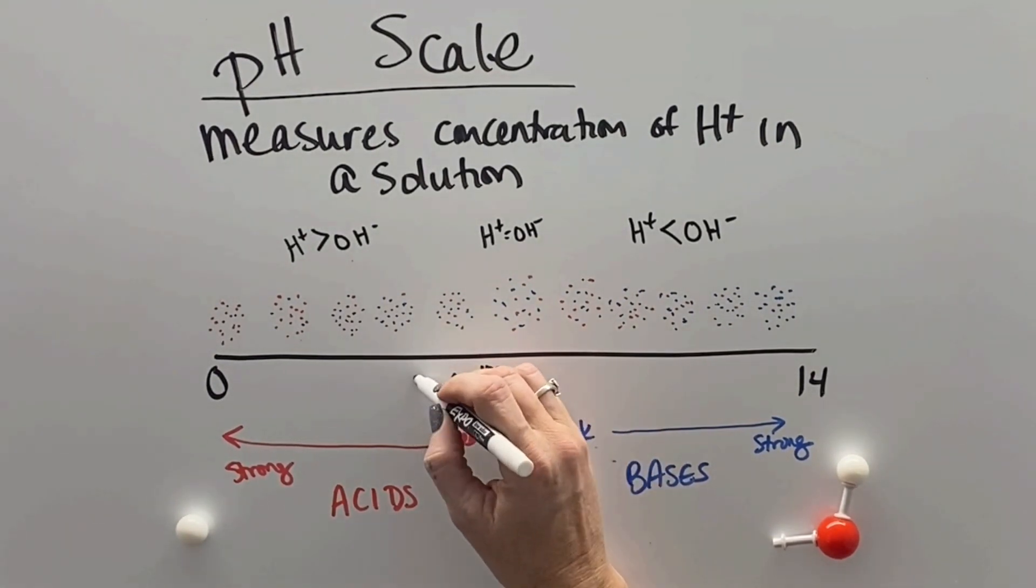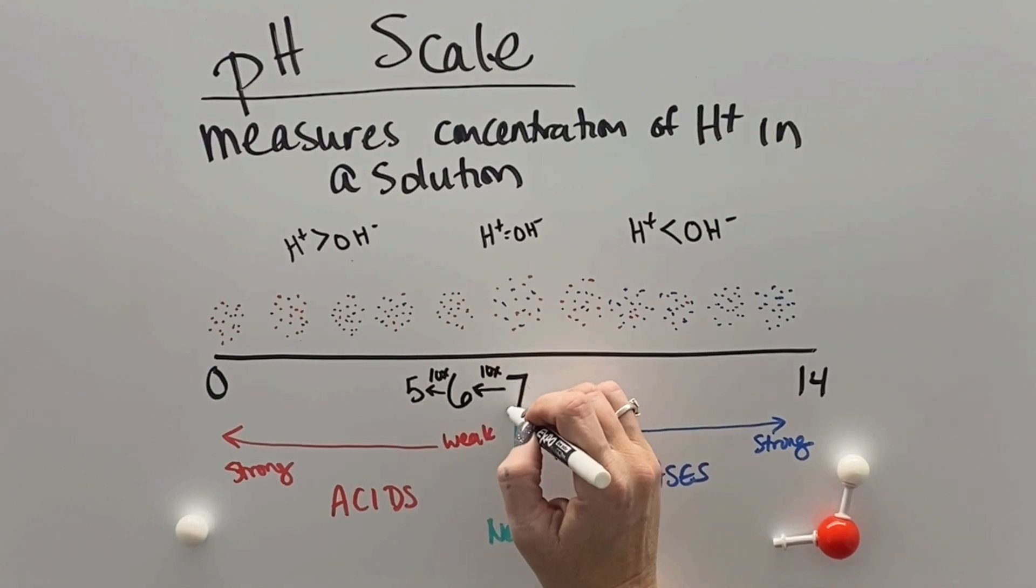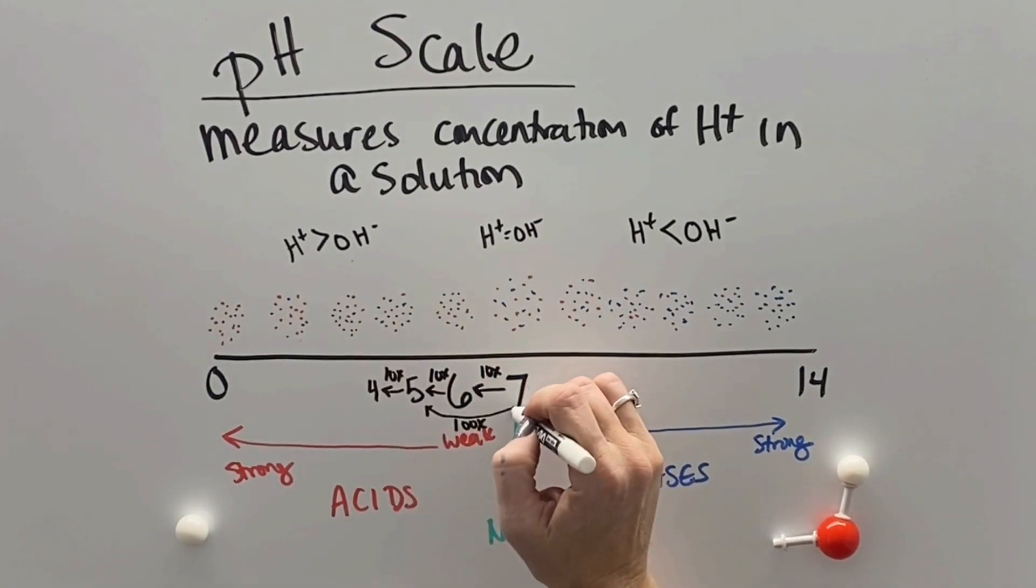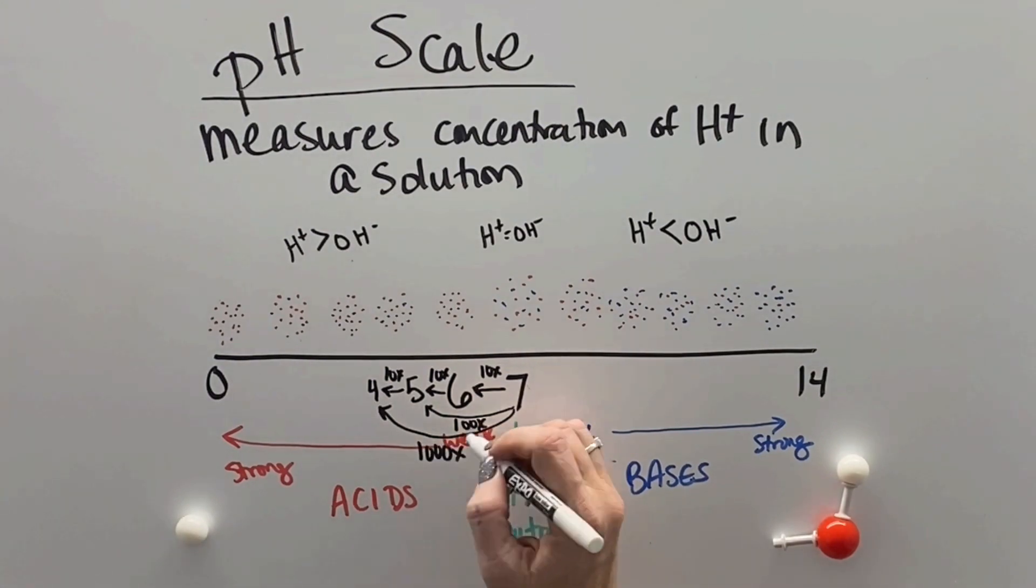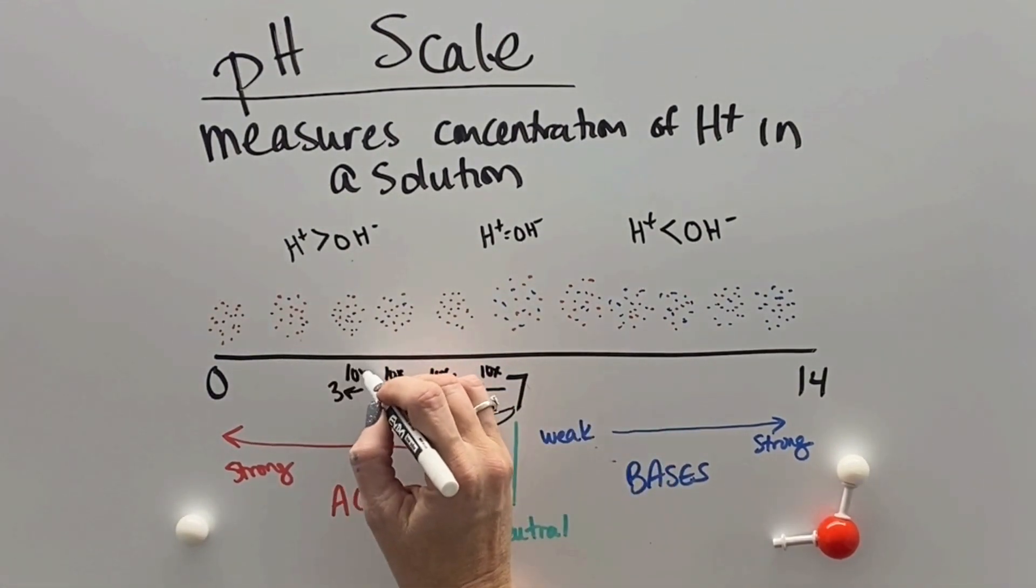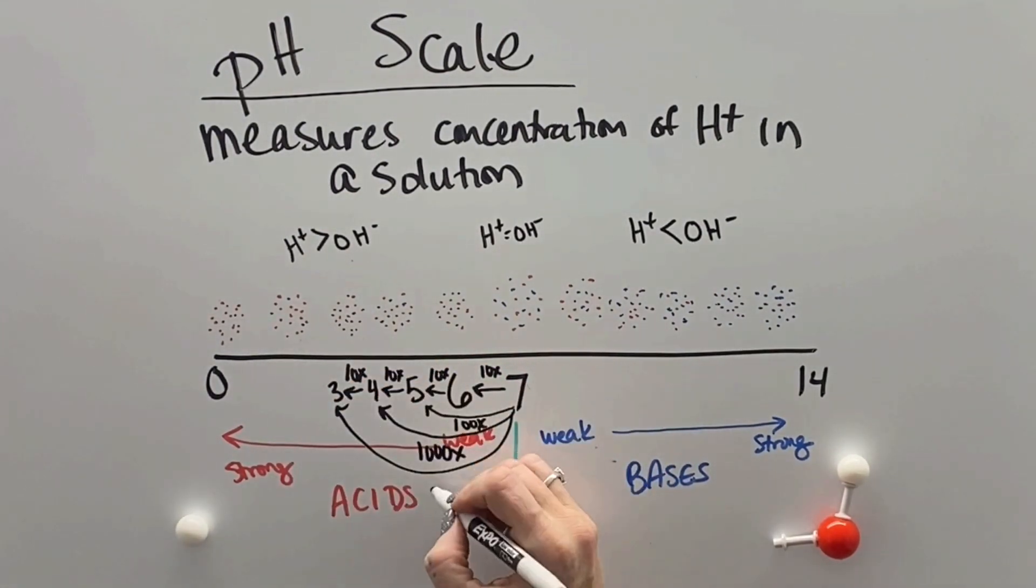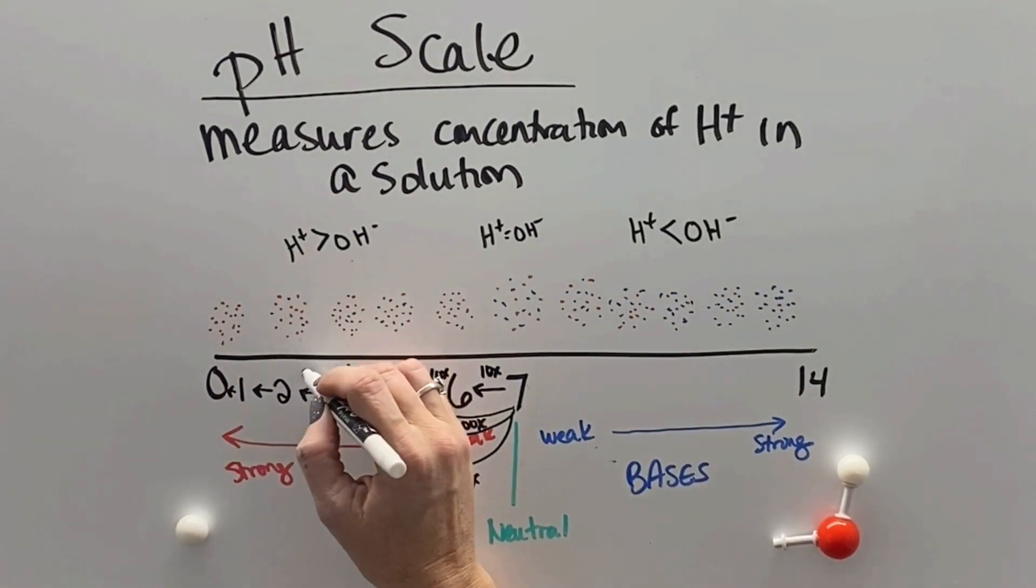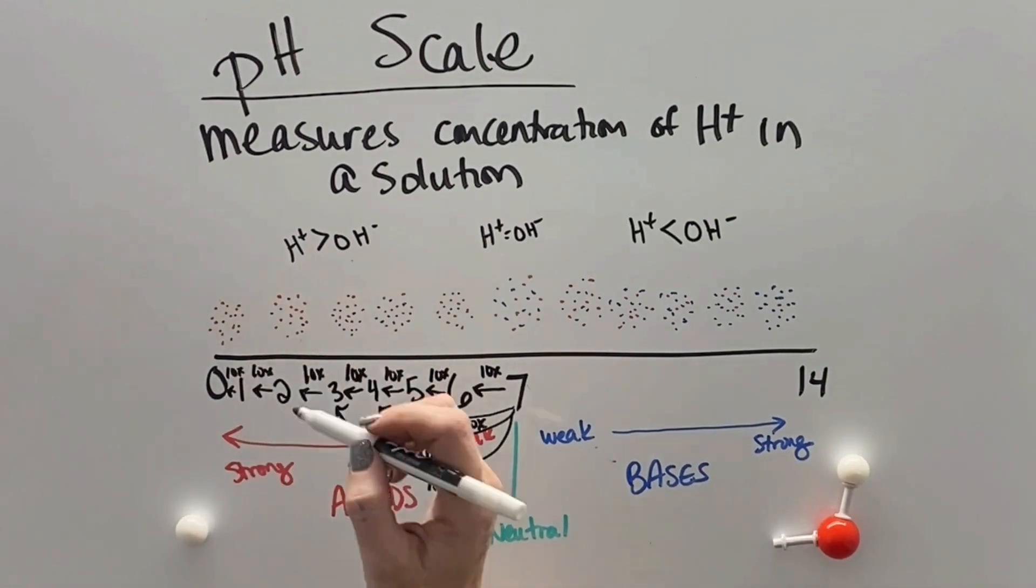Now, a 6 doesn't just have one more hydrogen. It actually has 10 more, 10 times the number of hydrogens. So every step that we move away from 7, it gets 10 times stronger. So 3 is actually 10,000 times more hydroxides than 7. Which is pretty intense.